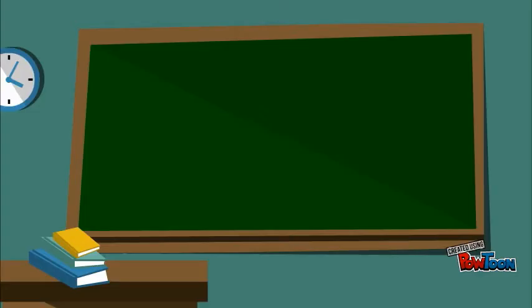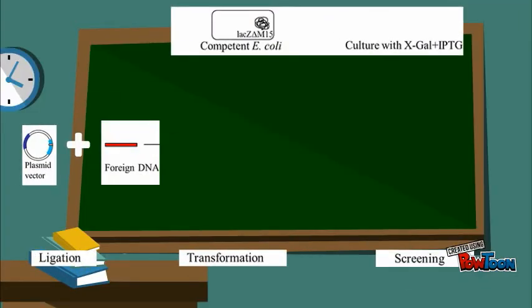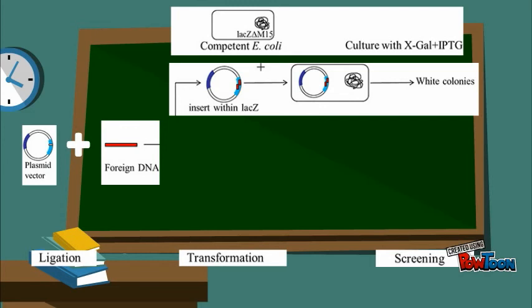The media is cultured with X-gal and IPTG. Foreign DNA inserted within the LacZ gene in the plasmid vector produces white colonies. This is because the recombinant cell with foreign DNA will disrupt the LacZ gene and not metabolize the X-gal.